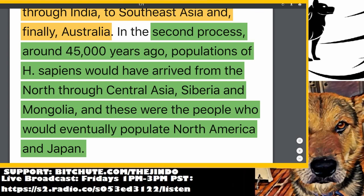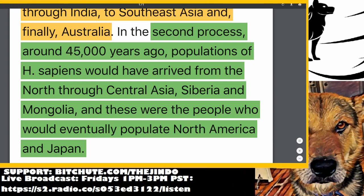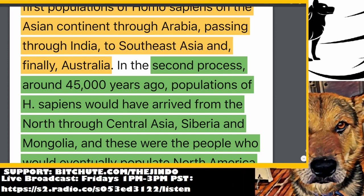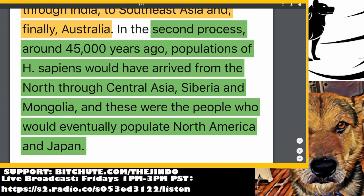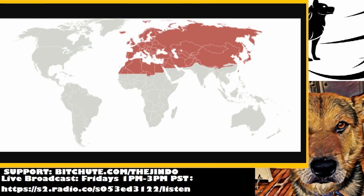The second process is around 45,000 years ago. Populations of Homo sapiens would have arrived from the north through Central Asia, Siberia, and Mongolia — that's the Paleoarctic. It's pretty interesting that such a huge land mass is actually a lot younger, at least in terms of Chinese demographics of the Late Pleistocene. It took almost 35,000 years after people populated the Oriental zone for this second wave to come through — the people who would eventually populate North America and Japan.